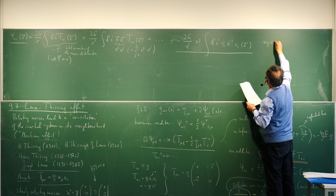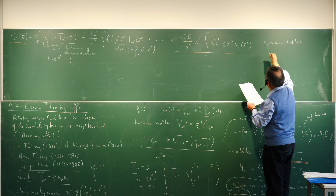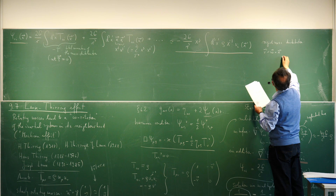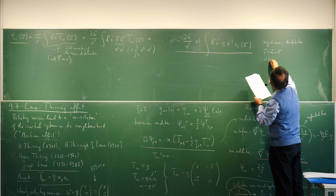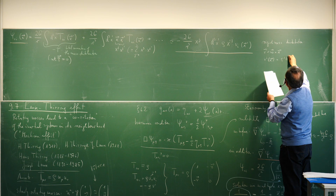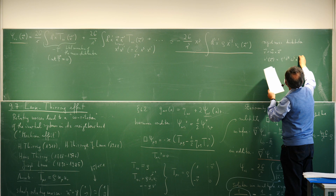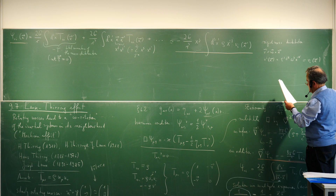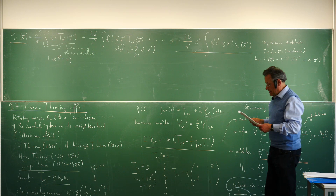We assume a rigidly rotating mass distribution and use the standard relation between velocity and angular velocity: v^i = (ω × x')^i = ε_{ijk} ω_j x'_k. This is inserted into the integral.